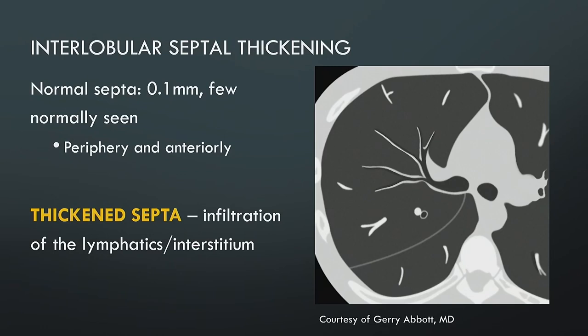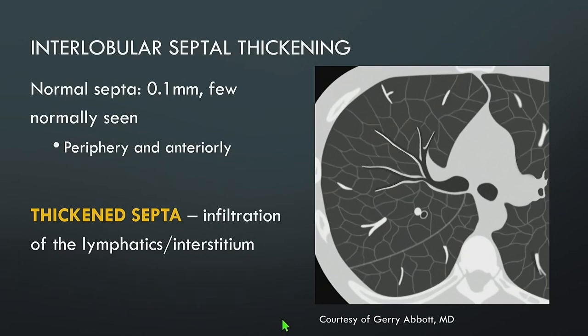What does it mean when we talk about interlobular septal thickening? On a normal CT scan, you generally do not see the septa because they're about 0.1 millimeters thick. You may see a few at the periphery and anteriorly, but mostly just normal bronchi and vasculature. When the septa get thickened — meaning the pulmonary veins and lymphatics get infiltrated with fluid or anything else — you get septal thickening, and then you can see the secondary pulmonary lobules.